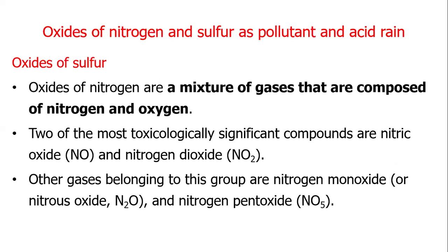Oxides of Nitrogen are a mixture of gases that are composed of nitrogen and oxygen. Two of the most toxicologically significant compounds are nitric oxide and nitrogen dioxide. Other gases belonging to this group are nitrogen monoxide, nitrous oxide, and nitrogen pentoxide.